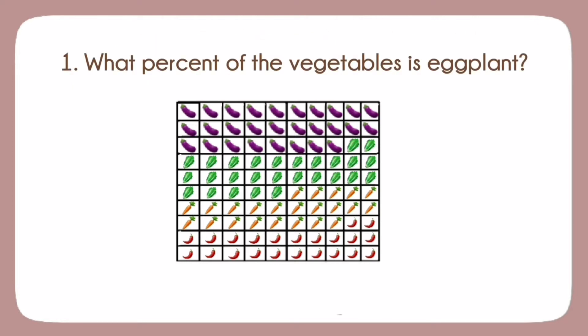Here are the questions. 1. What percent of the vegetables is eggplant? A. 23%. B. 27%. C. 28%. D. 30%.